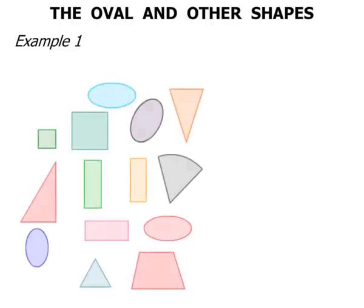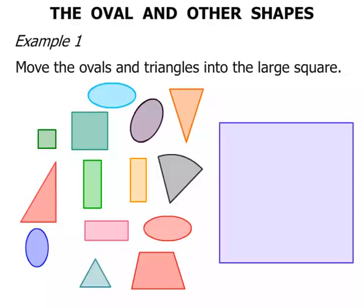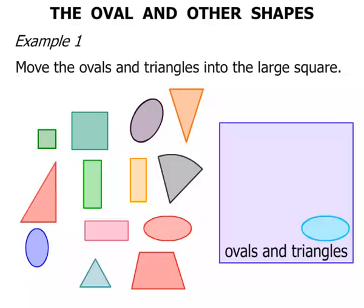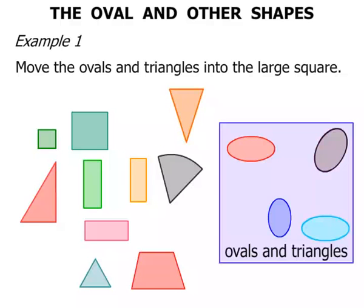Example 1. We have a bunch of different shapes. We are going to move the Ovals and Triangles into the large Square — we are going to put all the Ovals and Triangles in there. So let's start with the Ovals first. There is one, let's move it across. There is another one. There is another Oval — that one is on its side a little bit, a bit of a diagonal. Can you see any more Ovals? No, neither can I.